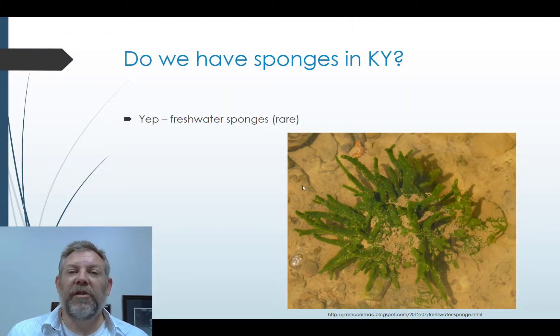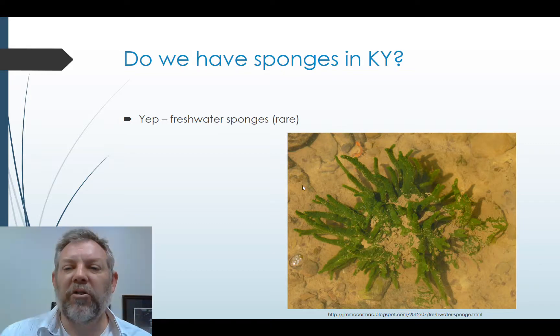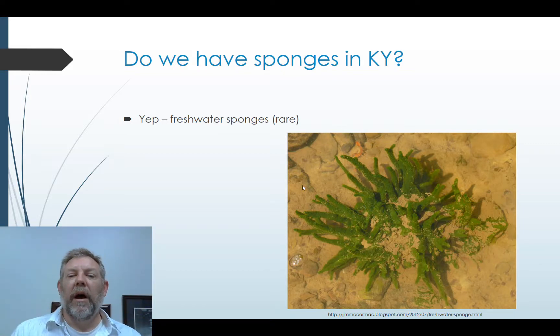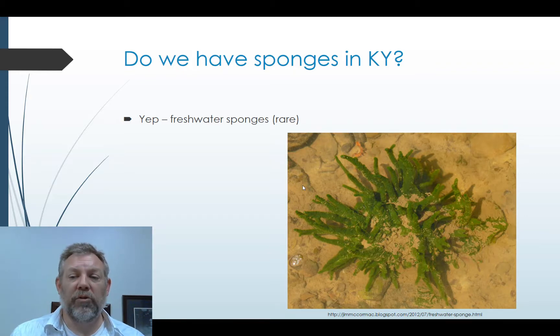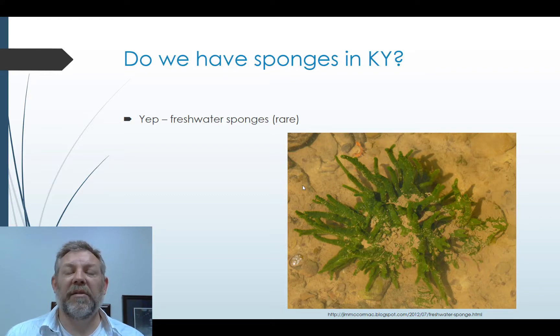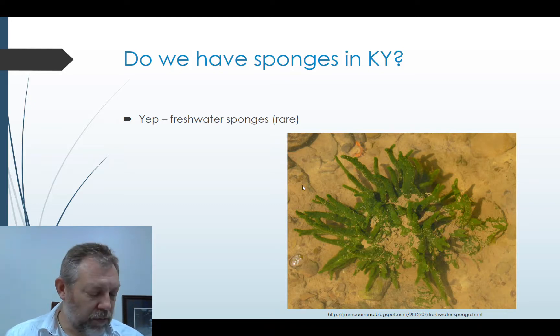Do we have sponges in Kentucky? Yes, we do. Freshwater sponges are rare — much more common in the ocean — but there are freshwater sponges and you can find them in pristine environments here in Kentucky. So that's it for the Porifera. We're going to look at some of these structures and some of these adults in class. Let me know if you've got any questions. See ya.